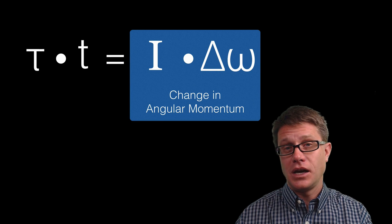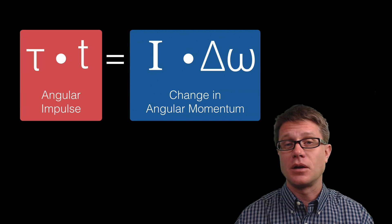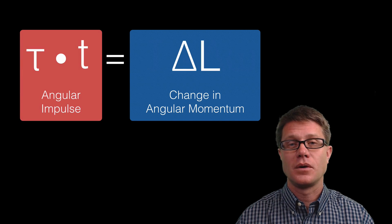And what do we get? Change in angular momentum on the right. And what do we have on the left? This is going to be our angular impulse, or delta L.